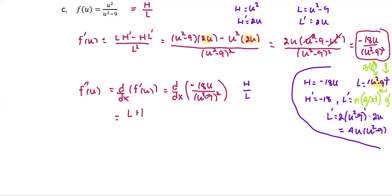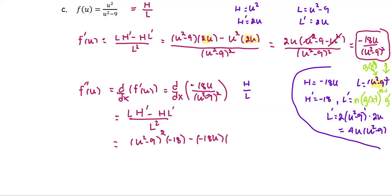Again, low d high minus high d low, draw the line, low squared. The low for the second derivative is the quantity u squared minus 9 squared, times d high which is negative 18, minus the high which is negative 18u, times d low, which is 4 times u times u squared minus 9. All divided by the low squared — the quantity u squared minus 9 squared, squared.